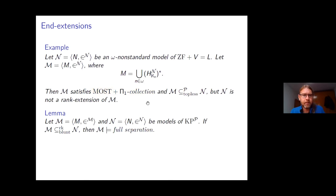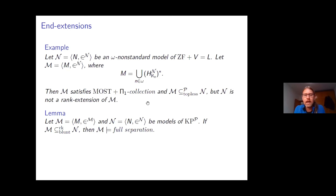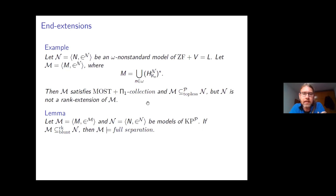This relates to the earlier question: as long as there's enough background set theory — certainly if both models satisfy KPP and you have the ranks available — once you have a blunt end extension you can find a set in the extension containing exactly the points of M. So M is realised as a set, and any instance of full separation can be reduced to bounded separation. If M is ω-nonstandard you also get recursive saturation of M.